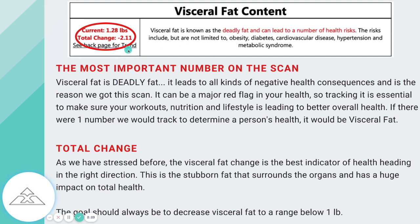So this is the most important number on the scan. We went over this on the first test, and now we can see a total change, with a trend on the last page as well. The total change is highlighted as either a positive or negative number right below where your current amount is. This person went down 2.11 pounds since their first test. That's amazing — it's a result of amazing lifestyle changes.